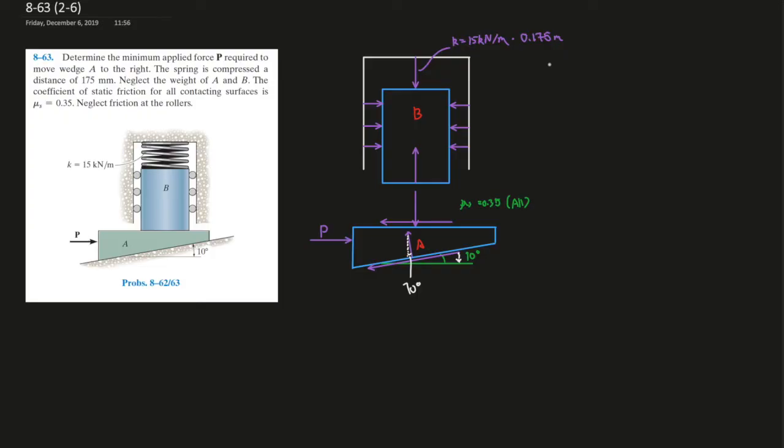Always draw your free body diagram when you do frictional bridges or machines or frames. This is like a machine type of setup. Always draw different parts of the machines and frames, and then draw the free body diagram separately.